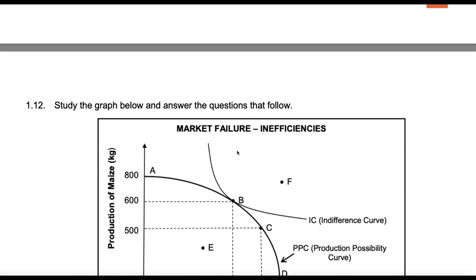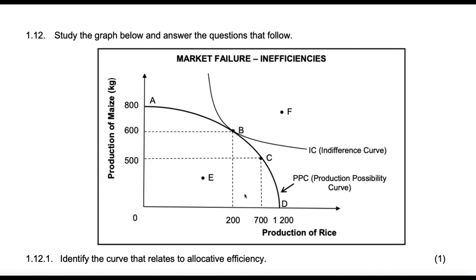We have a couple of points: Point A, B, and C. Point A shows that we are producing maize and no rice. Point D shows we are using all our resources in the production of rice and no resources in the production of maize. Point C shows we give up some rice and begin to gain some maize, or the opposite. Point B is the best combination because productively it's efficient and allocatively it's efficient. Point F is both productively and allocatively inefficient — actually, productively it's impossible. Point E is productively inefficient and allocatively inefficient.